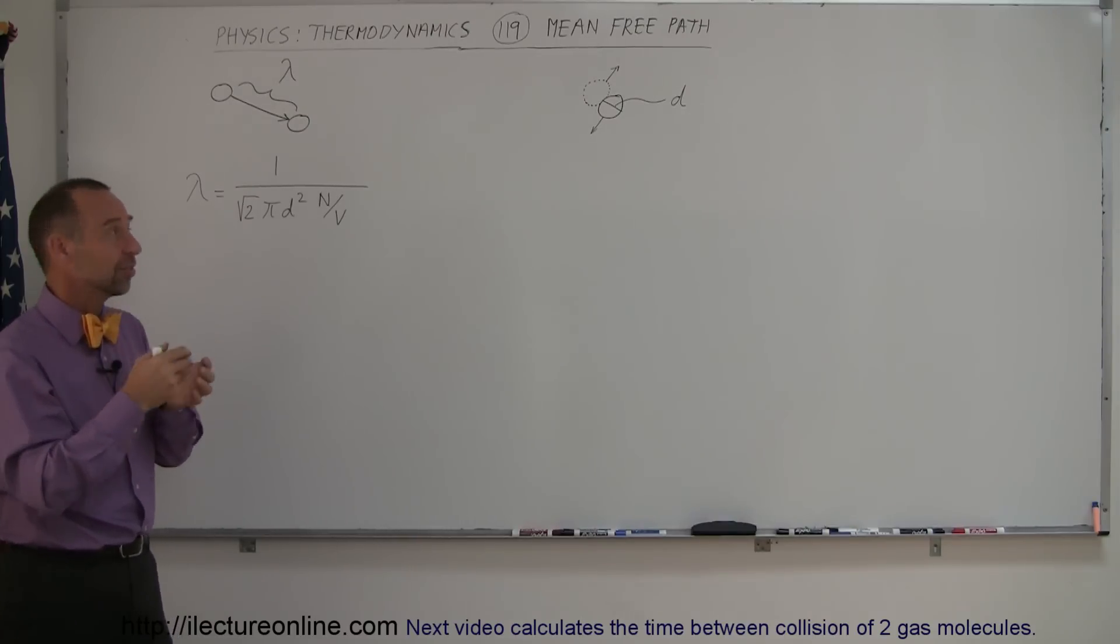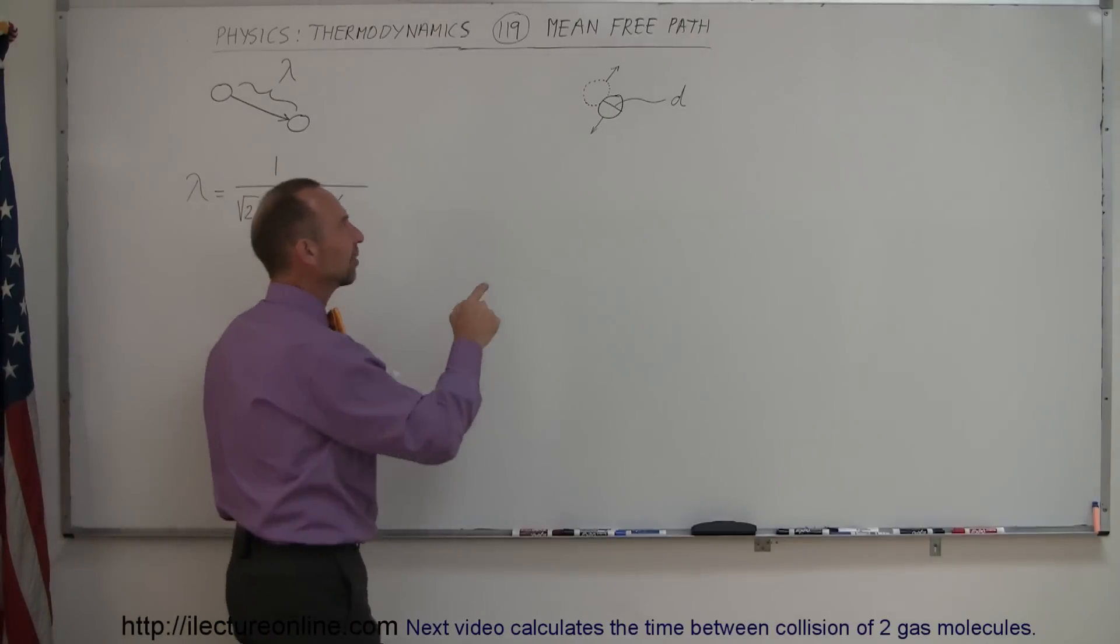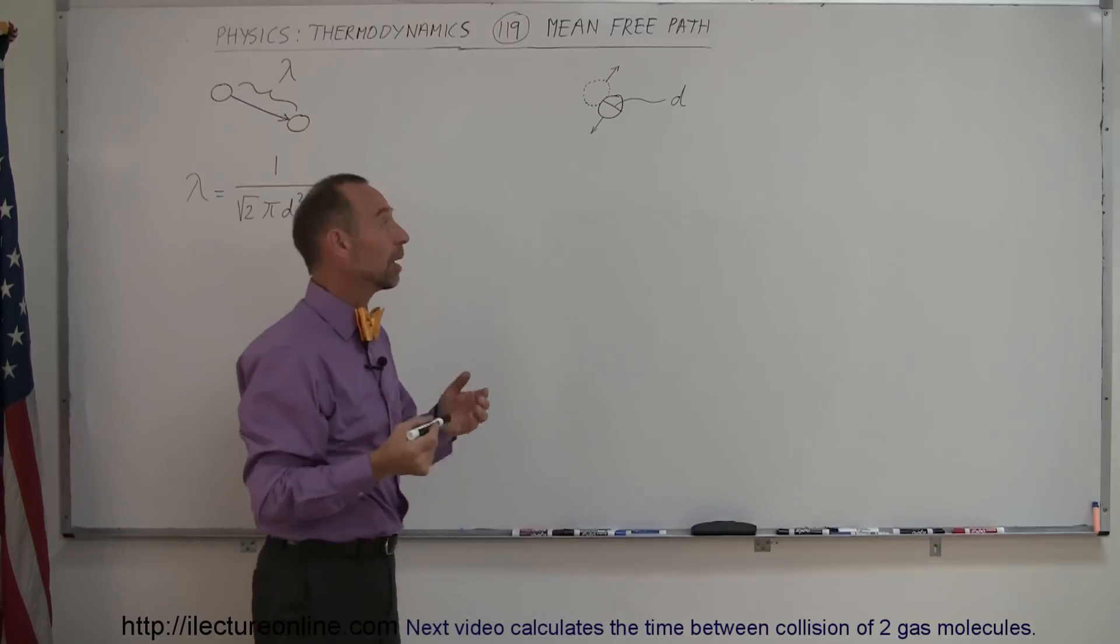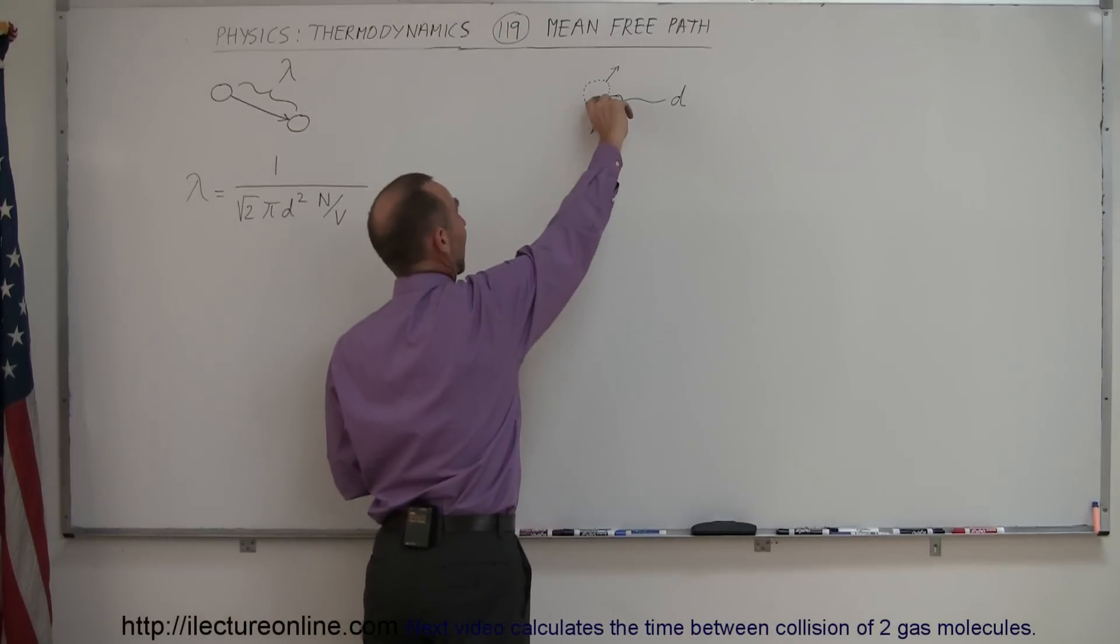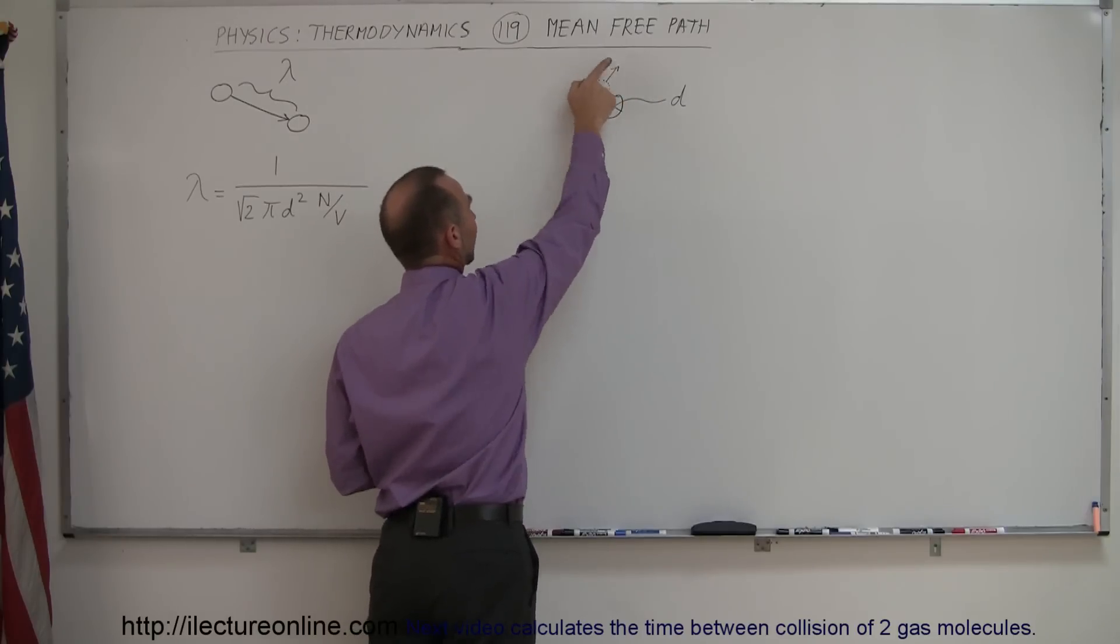The way to look at it is to say there's molecules going all different directions and they're going to be constantly colliding with each other. So the way we want to look at it is here: What will prevent a molecule from colliding with another molecule? Let's say we have a molecule that has diameter d traveling this direction, another molecule with the same diameter traveling this direction.